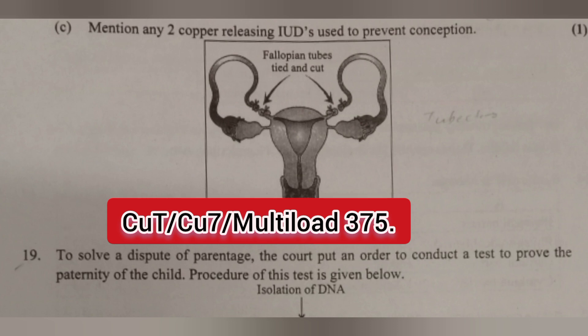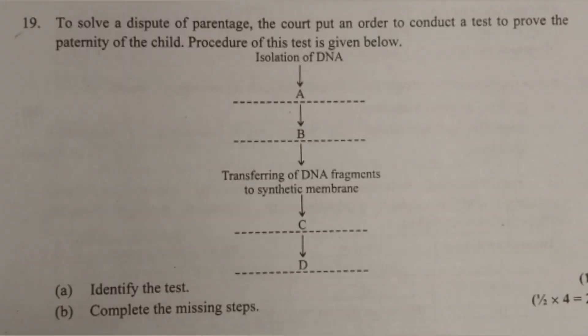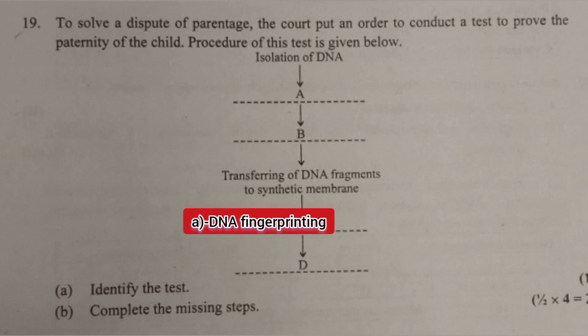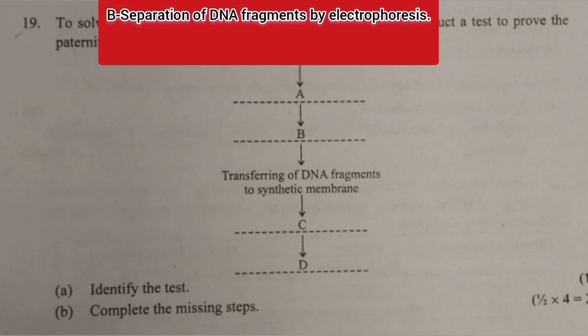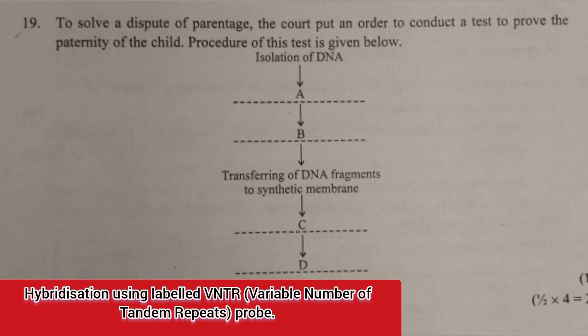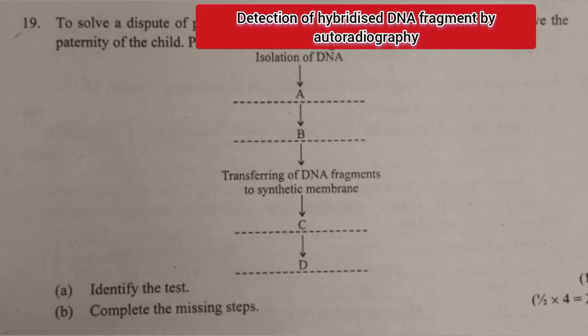Question 19: To resolve a dispute of parentage, the court ordered a test to prove the paternity of a child. A. Identify the test — Answer: DNA fingerprinting. B. Complete the missing steps — Answer: A. Digestion of DNA by restriction endonuclease. B. Separation of DNA fragments by electrophoresis. C. Hybridization using labeled VNTR (Variable Number of Tandem Repeats) probe. D. Detection of hybridized DNA fragments by autoradiography.